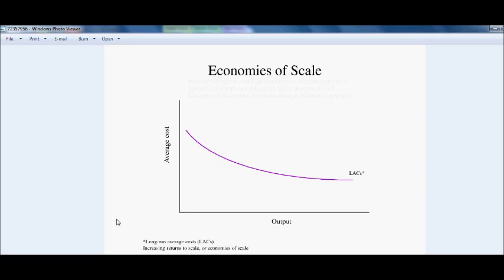This notion derives from Adam Smith's division of labor theory. As a company grows larger and produces more goods, the cost per good is reduced due to specialization. Specialization refers to the notion of everyone in a company specializing in one factor of the overall manufacturing process.